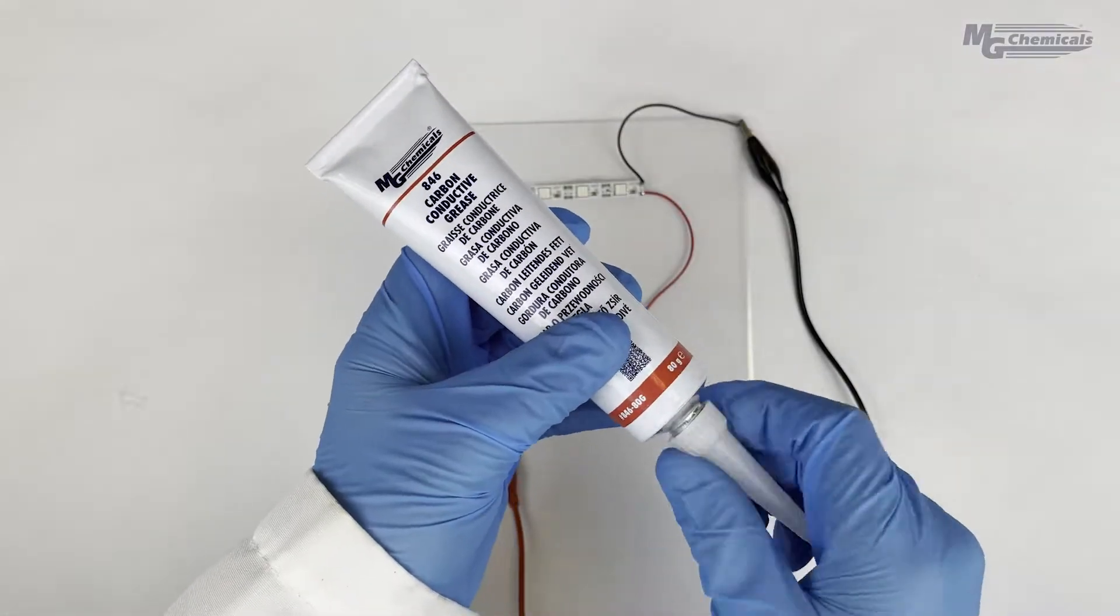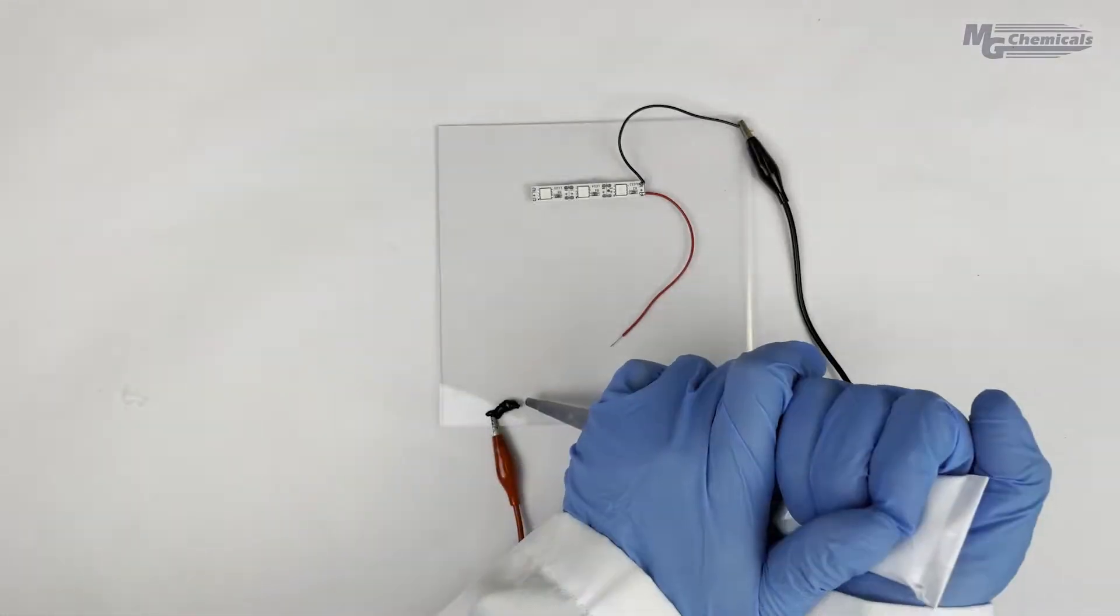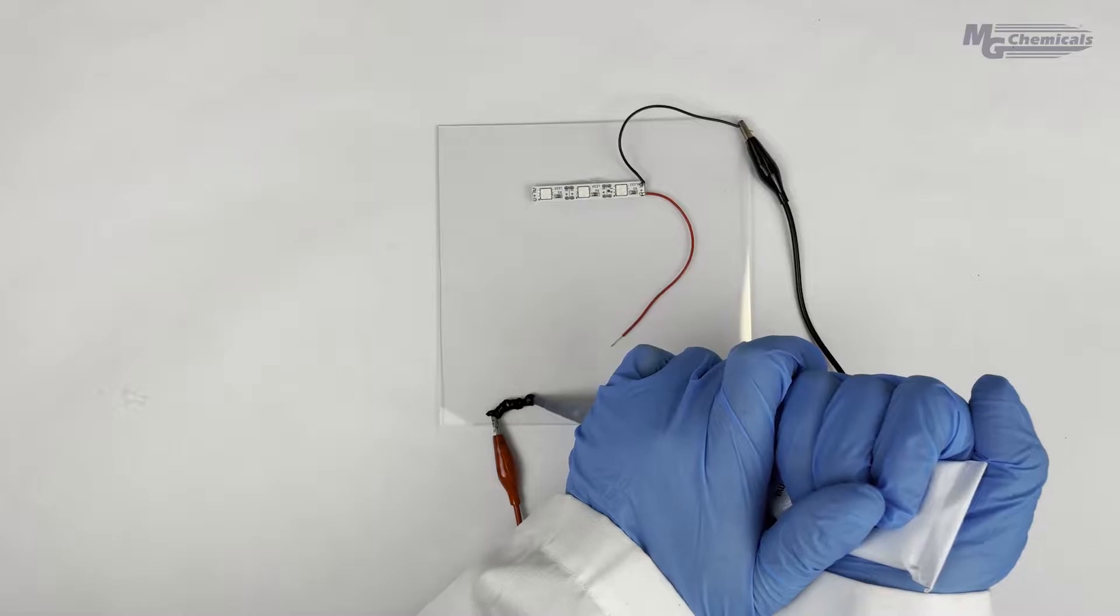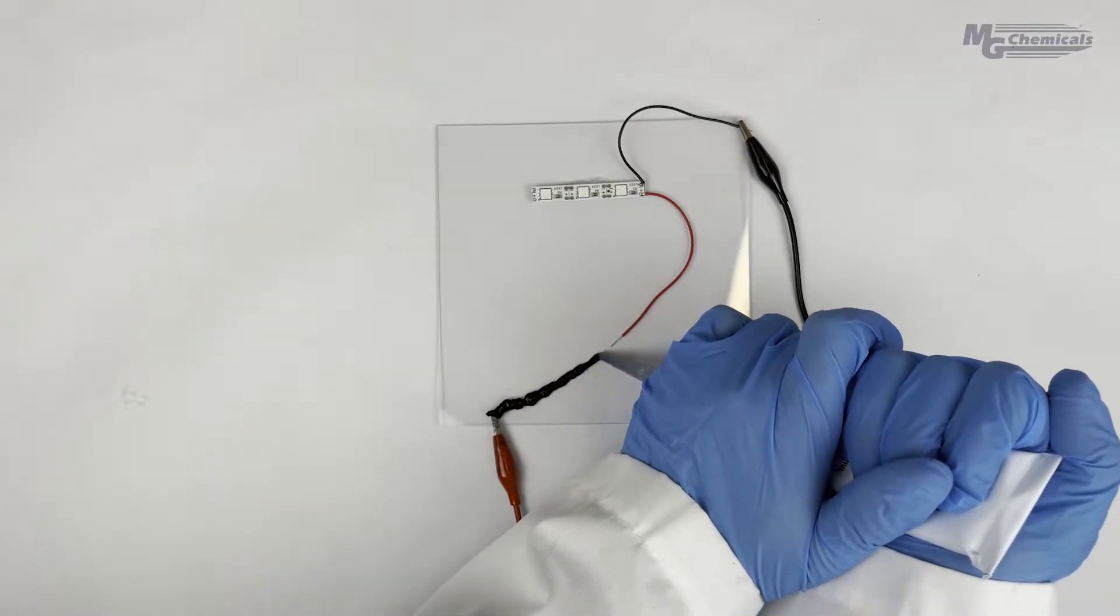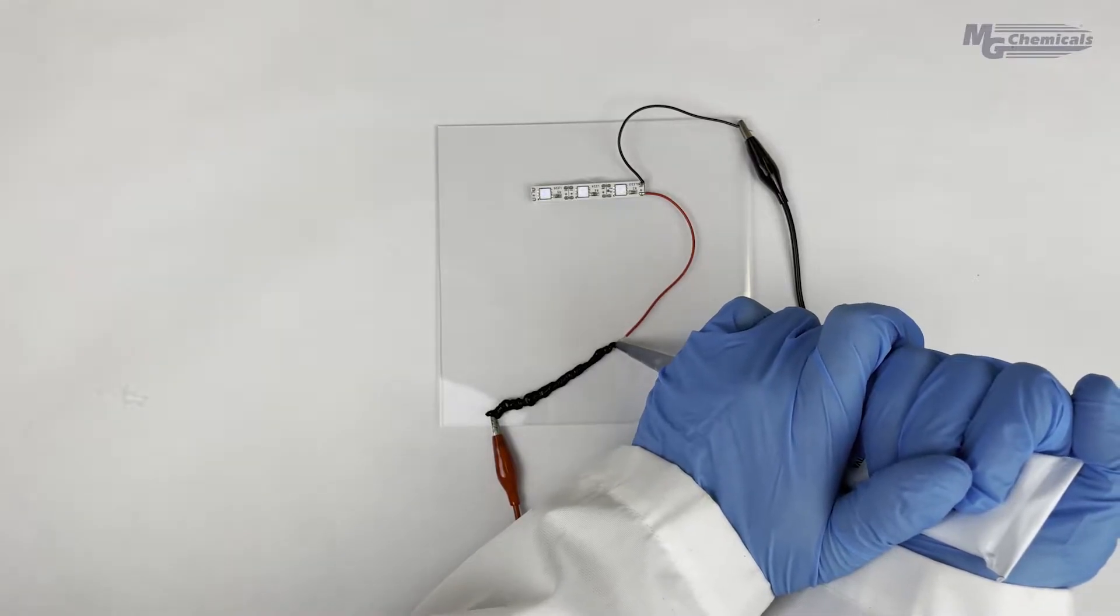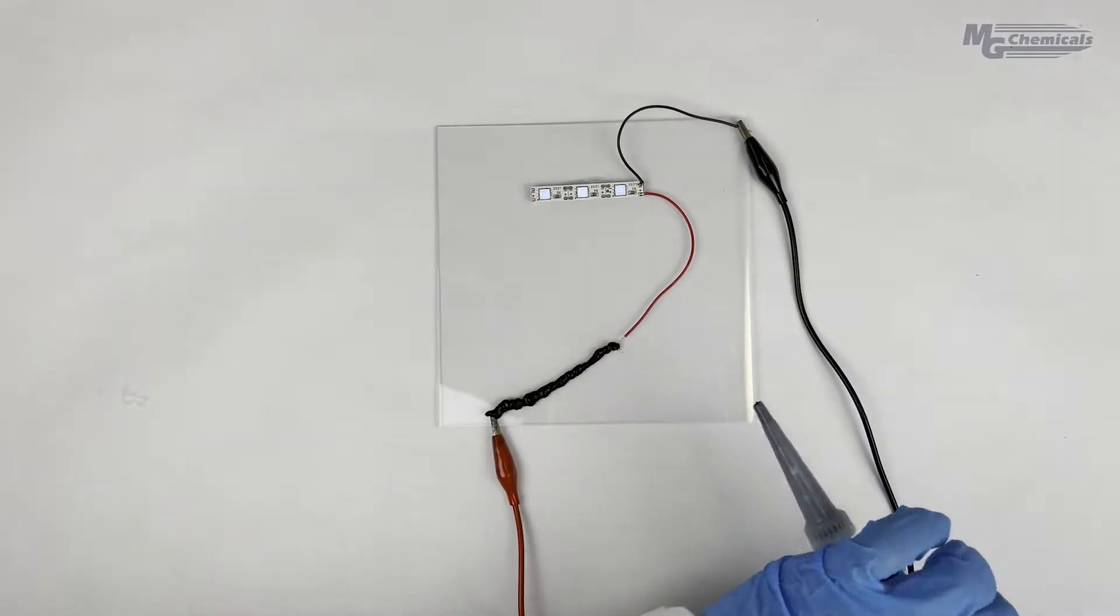For our next demonstration, we will show how the carbon conductive grease can be used to bridge electrical contacts to facilitate a current flow. The grease provides a path for the current to flow between the two leads so the light can function.